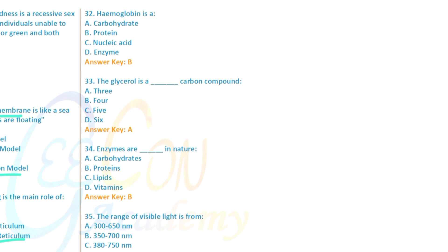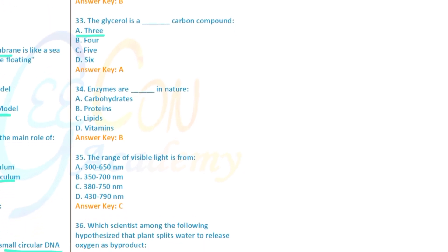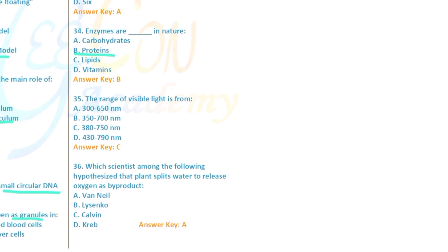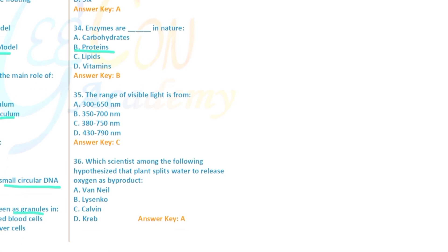Glycerol is a three-carbon compound. Enzymes are biological and protein in nature. The range of visible light is from approximately 400 to 700 nanometers — this range is ticked.